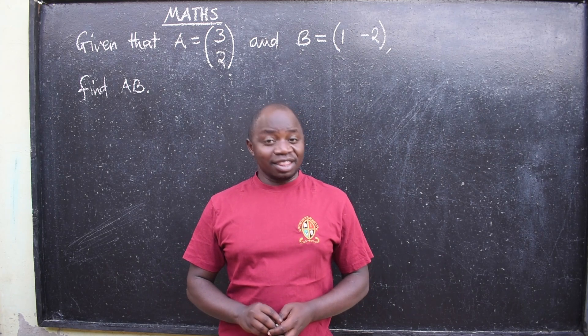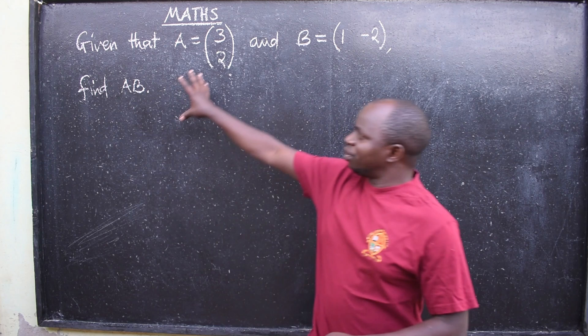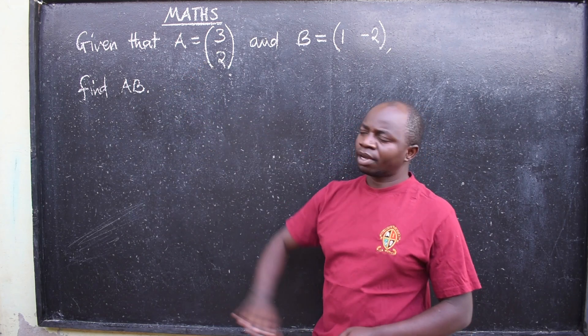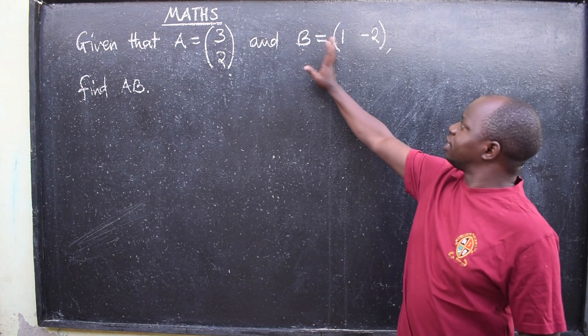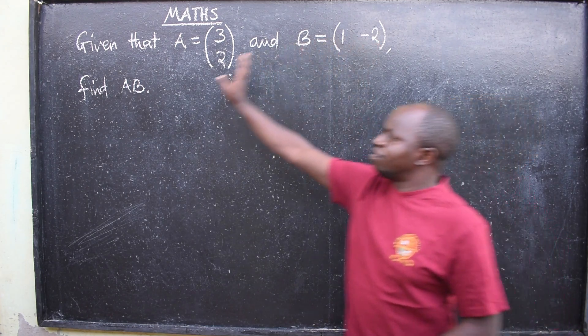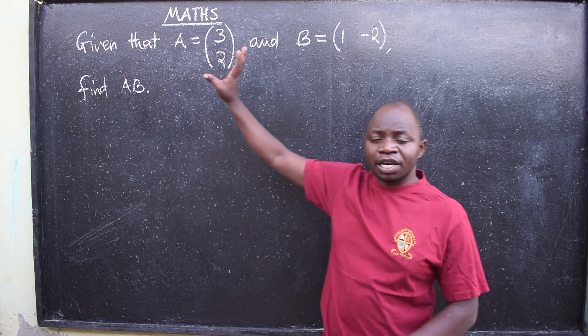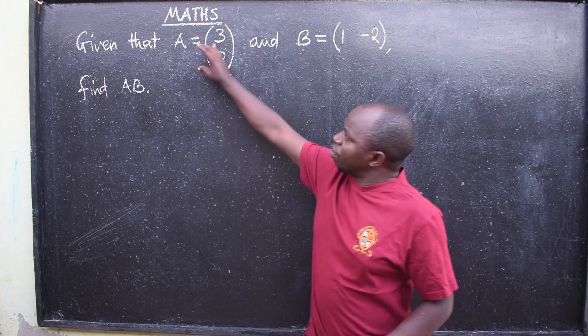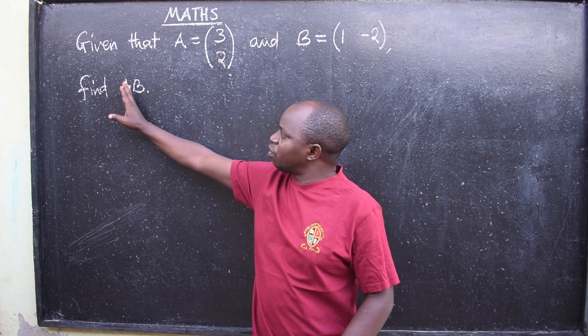Hello everyone, this is mathematics. In this lesson we want to look at the question on the board. Given that A equals (3, 2) and B equals (1, -2), find AB. The question is from a topic called matrices, so we've been provided with two matrices and we are told to find AB.